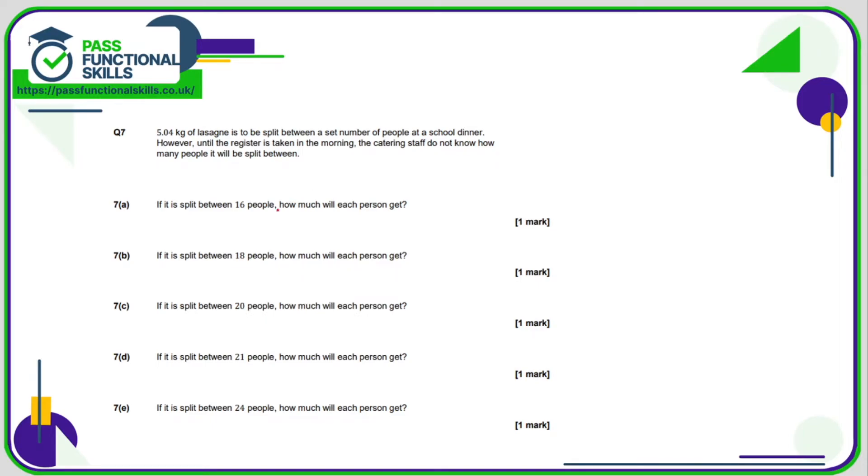So question seven is a calculator question. So what we're doing is we're sharing 5.04 kilos of lasagna between 16 people. So 5.04 divided by 16 works out as 0.315 kilos per person or 315 grams per person. Now that we've done part A, B, C, D, E are very easy. It's exactly the same, dividing by 18 or 20, 21 and 24. But since we're sharing the same amount, but among more people, that should result in a smaller amount per person. So B works out as 0.28. C, 0.252, 0.24 and finally 0.21. So if that question wasn't too bad, it was quite repetitive in the end.